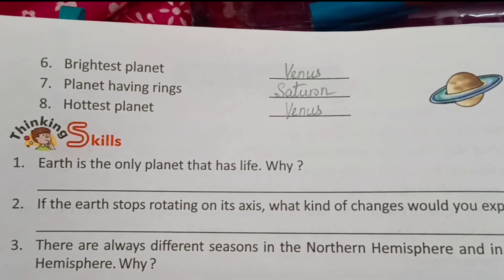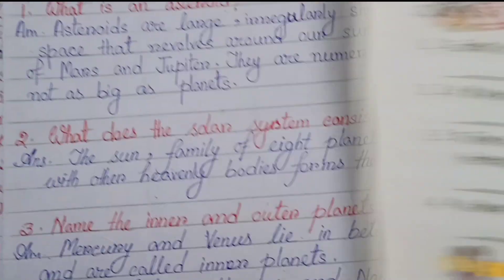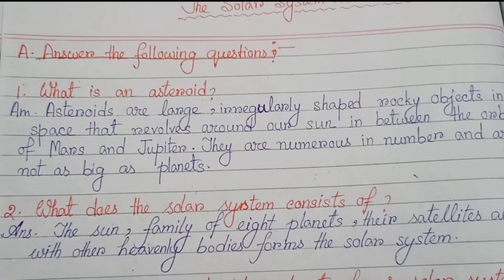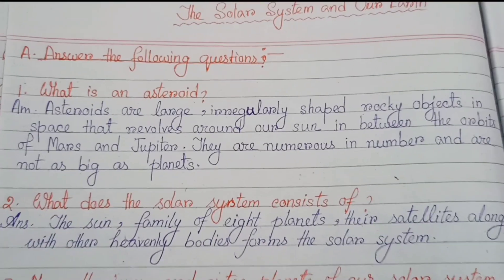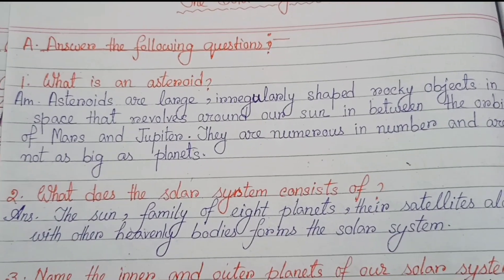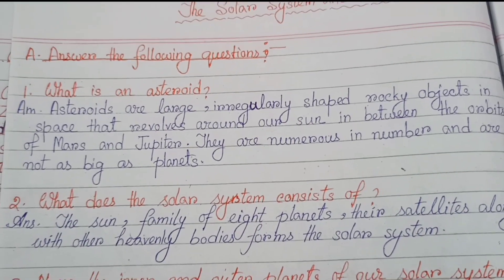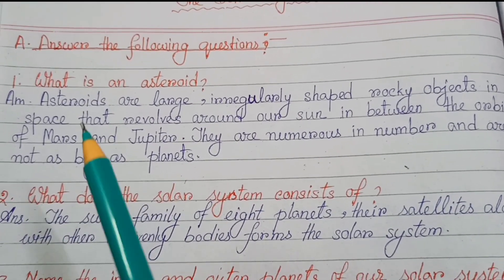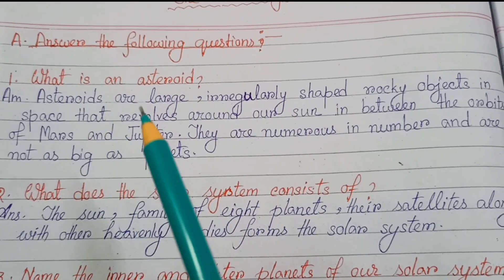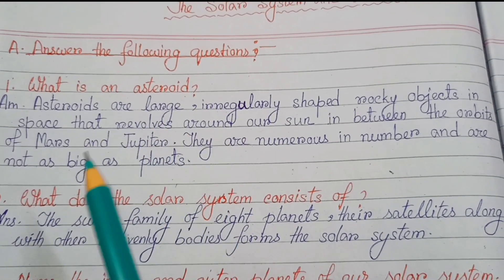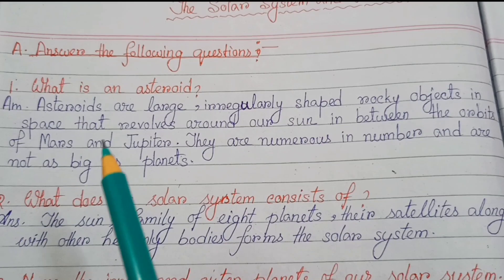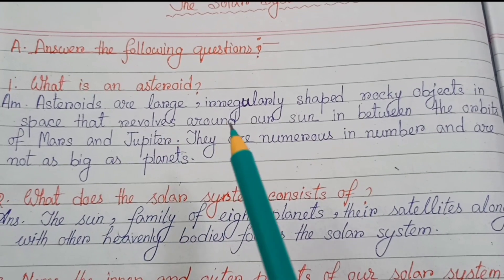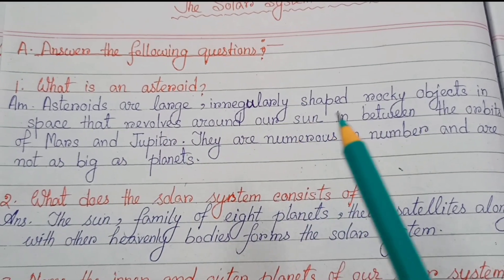Number six: Brightest planet — Venus. Number seven: Planet having rings — Saturn. Number eight: Hottest planet — Venus.